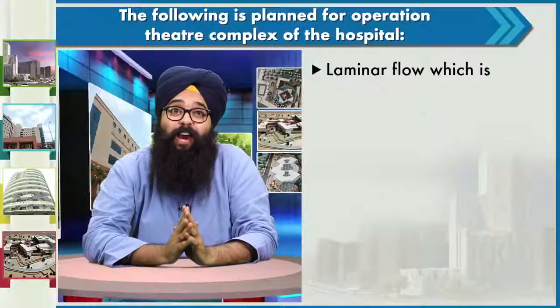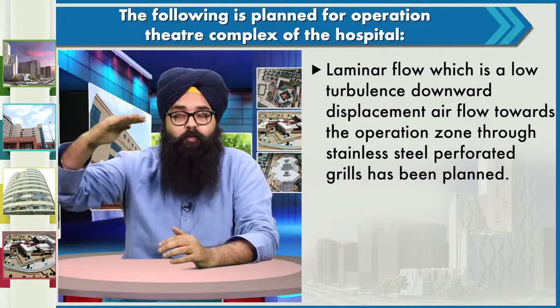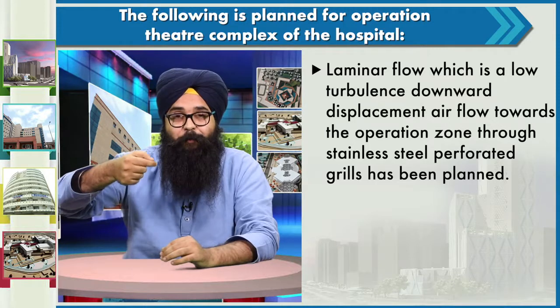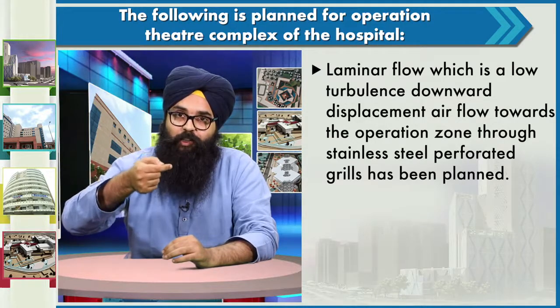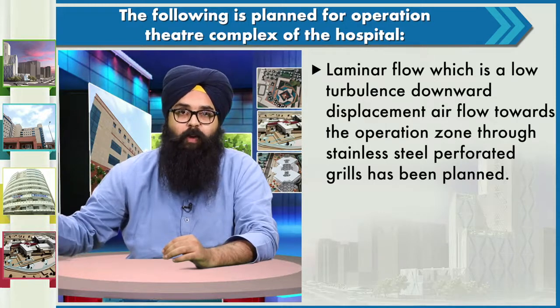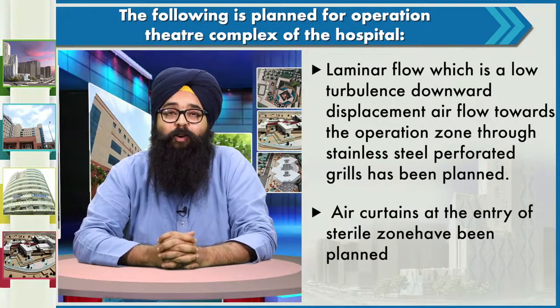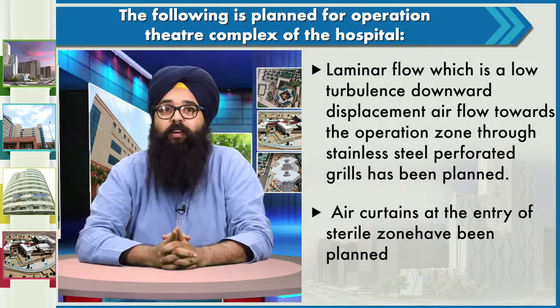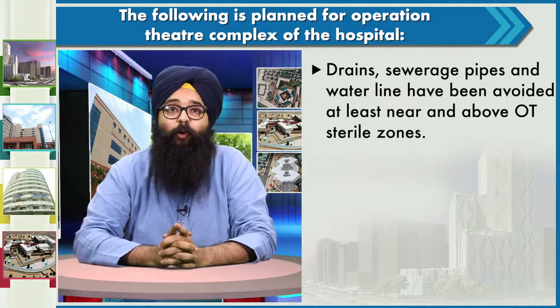An important factor is the HVAC design for an operation theatre. OT HVAC design is unique because it uses laminar flow — a low-turbulence downward displacement of airflow. Air flows from the top downward, first touching the healthcare provider then the patient, then exiting below where it is sucked back into the system and passed through the AHU filters. Air curtains at the entry of the sterile zone must be planned. Drains, sewerage pipes, and water lines should be avoided near and above the OT sterile zones.